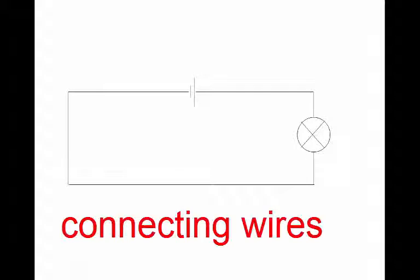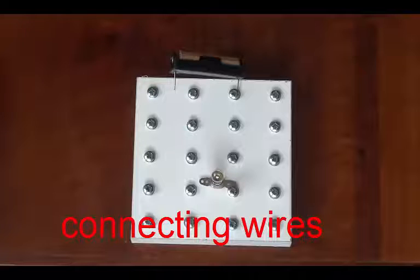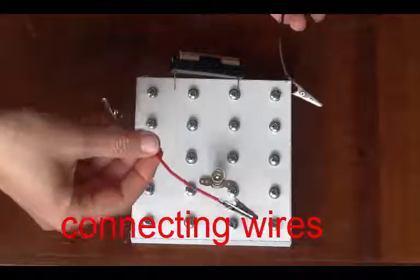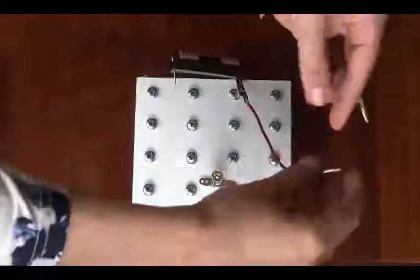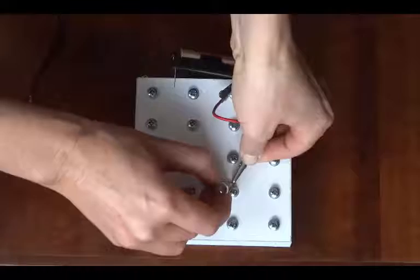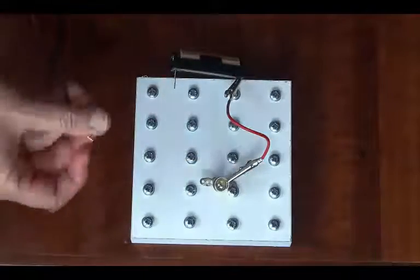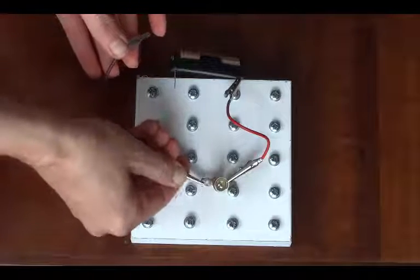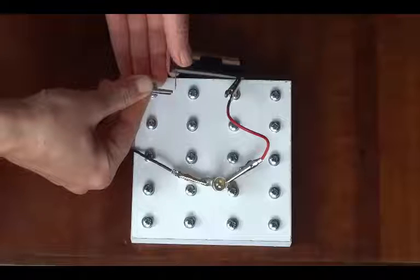Then, of course, we need connecting wires, connecting one terminal of the cell to one side of the bulb and the other terminal of the cell to the other side of the bulb. And so I'm going to use these crocodile clip wires and I'm going to connect the red one to the positive terminal of the cell. And then to one connection on the bulb. I could connect it to that screw, but I'm just going straight to the bulb, the bulb holder rather.